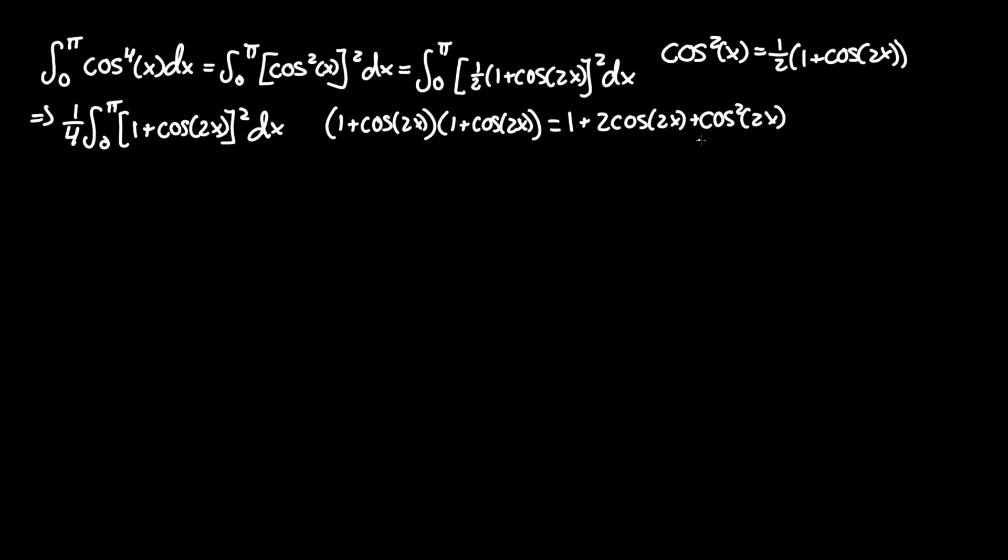You can see we have another cos² of a quantity, 2x, where we can apply the identity again. However, since it's 2x, we'll have to double that again, which becomes 4x.